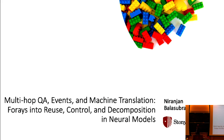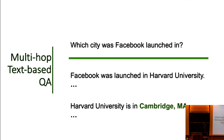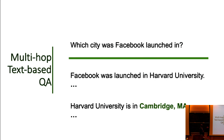I'm going to dive right in. I'll start with multihop text-based question answering. Rather than trying to define what this is, I'll just start with an example. A question like: which city was Facebook launched in? The usual idea is that you're given some text where different portions contain information that you should combine to answer the question. One sentence says Facebook was launched in Harvard, and another says Harvard is located in Cambridge. So you combine these two things and conclude that Cambridge is the city where Facebook was launched. That's what we typically mean by multihop text-based QA.